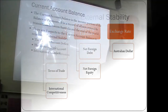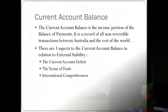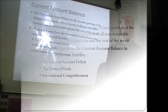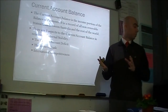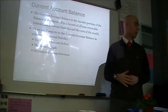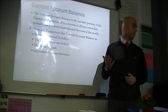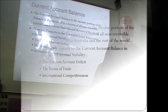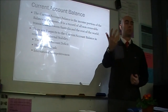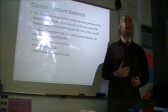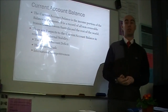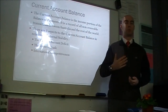Let's start with the current account balance and what it's made up of. The current account balance is the income portion of the balance of payments. You've got the income portion and the capital portion — the capital portion is the capital and financial account, and the income portion is the current account. It's a record of all non-reversible transactions between Australia and the rest of the world. A reversible transaction is giving a loan to someone in another country and having them repay it. A non-reversible transaction is the sale of goods and services to someone in another economy — once you do it, that's it, it's done.